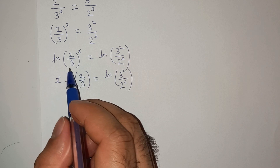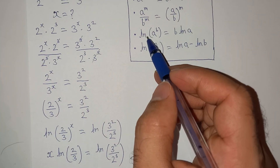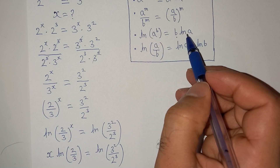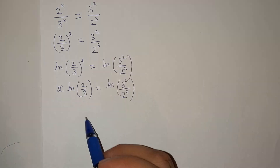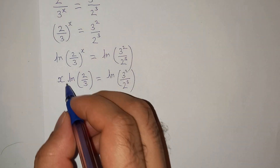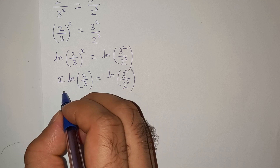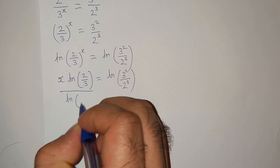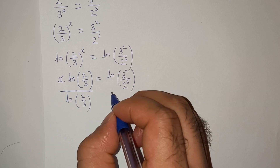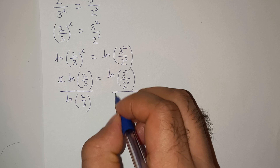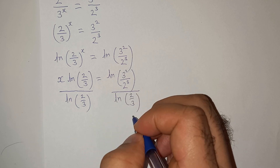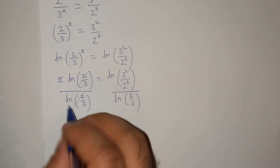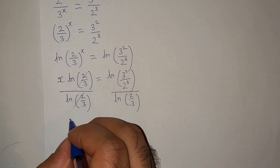This can be written as x times log(2/3) equals ln(3 squared divided by 2 cubed), using the logarithm rule: log(a power b) equals b times log a. Now dividing both sides by log(2/3), these cancel out and we are left with x on the left hand side.